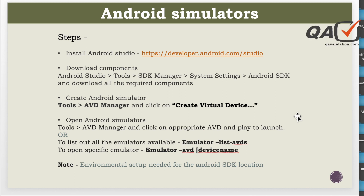Hello. In our Appium series we will see a few more topics today. We'll see how we can download and set up the Android simulators, then how we can install the applications into the Android simulator for automation testing of the mobile application, and then we'll see how we can download and set up the iOS simulator as well, and how we can install the application into the iOS devices — that is, the iPhone devices. So let's get started.